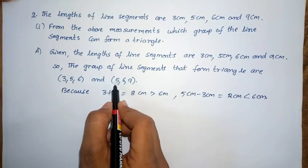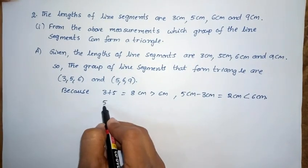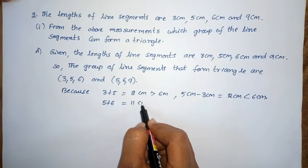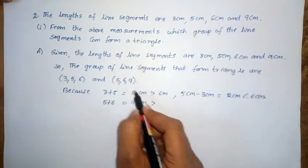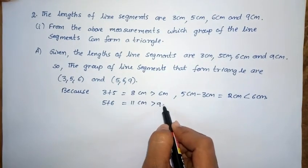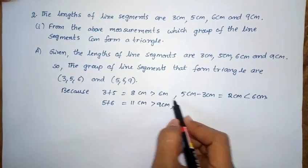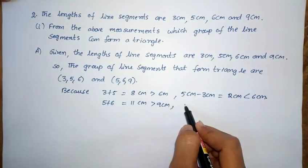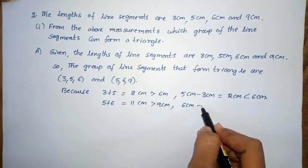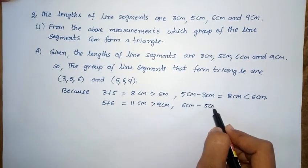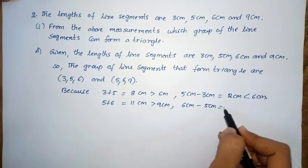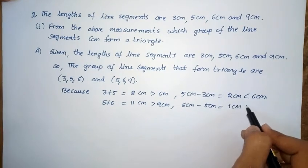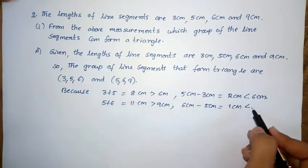Similarly for (5, 6, 9): 5 plus 6 equals 11 cm, which is greater than the third side, 9 cm. And the difference, 6 minus 5 equals 1 cm, which is less than the third side, 9 cm.